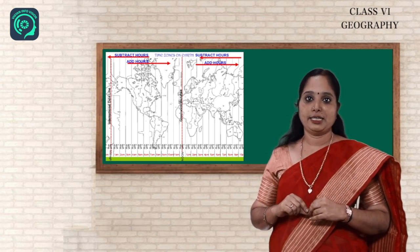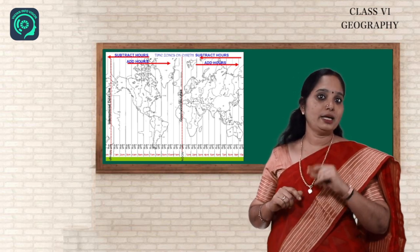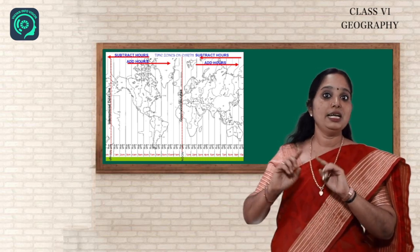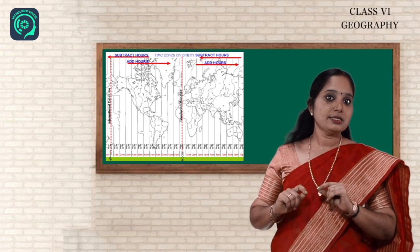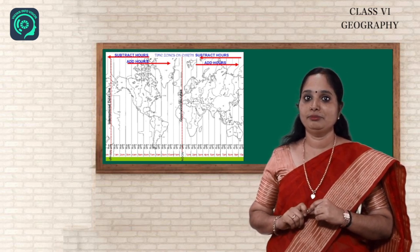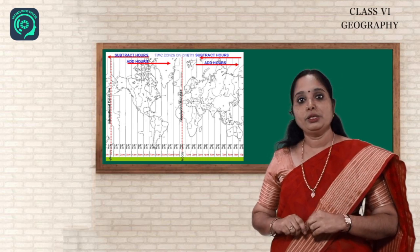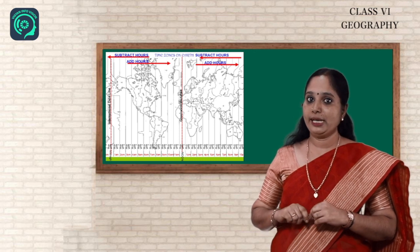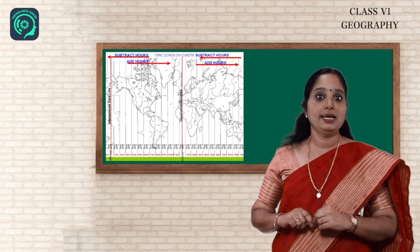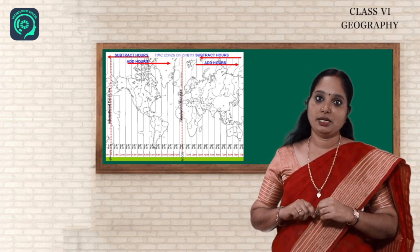We all adjust our time according to the Indian Standard Time. India has only one time zone, whereas there are countries which have many time zones — Russia has 11 time zones. In total there are 24 time zones in the world. Longitudes help us to determine time, and together with latitudes they help us to locate a place precisely on the earth. In this chapter you learned that latitudes and longitudes are very important imaginary lines which help us.